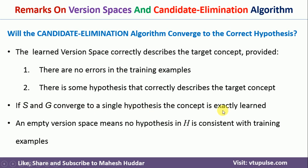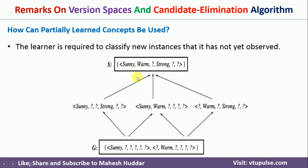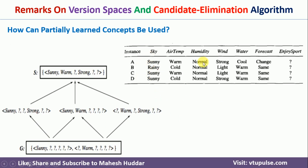This can occur only when there are errors in the training examples or there is no hypothesis that correctly describes the target concept. The second remark is related to this. If S and G have a single hypothesis, the concept is learned exactly. If S is not equivalent to G, the version space contains more than one hypothesis — a partially learned concept. If you have a partially learned concept, how can we use it to classify new examples? Let's consider the enjoy sport example again.